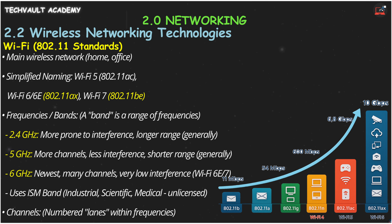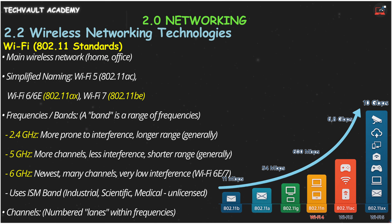Wi-Fi uses different radio frequencies. The common ones are 2.4 GHz, 5 GHz, and now 6 GHz. A band is just a group of these frequencies. Using different bands lets more devices connect without interference, but not every device supports every band.